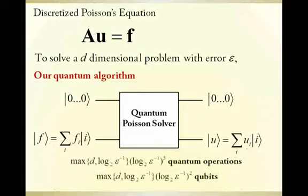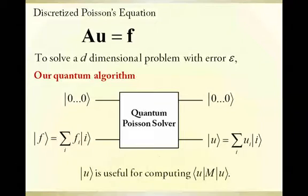The quantum circuit is efficient in terms of both quantum operations and number of qubits needed. The final state solution can be used for computing the expectation value of a certain quantum mechanical operator, M.